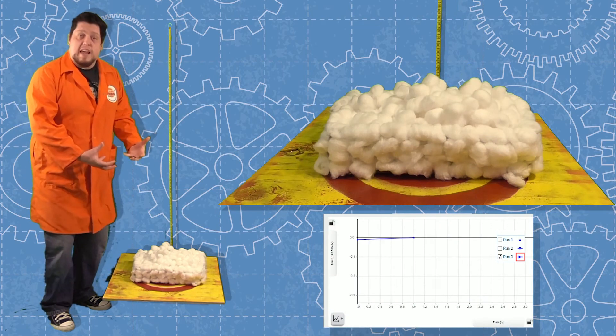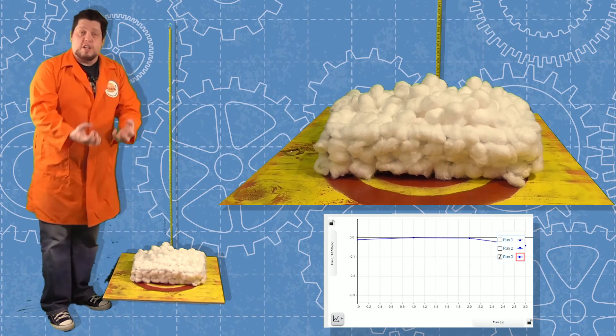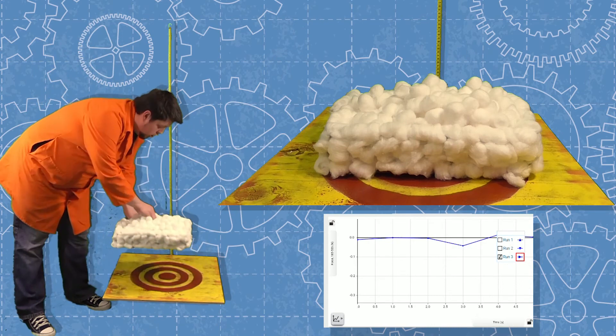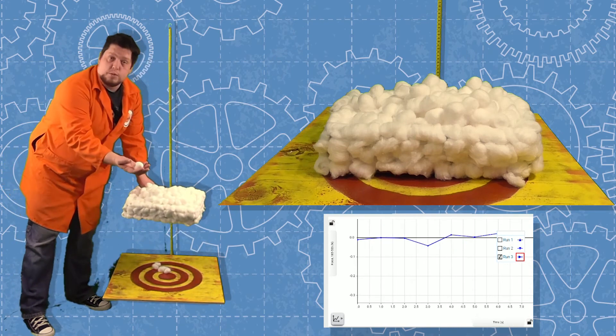So even though it hit the landing pad, the cushioning effect of the cotton slowed the egg down and led to its survival.